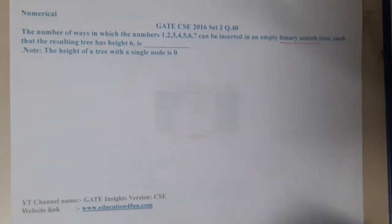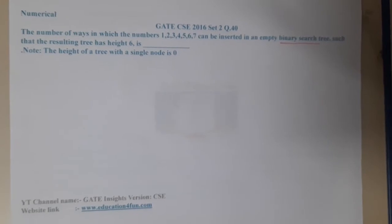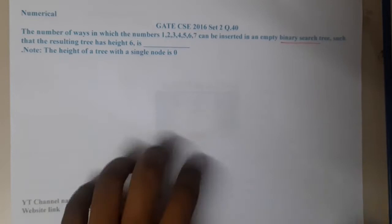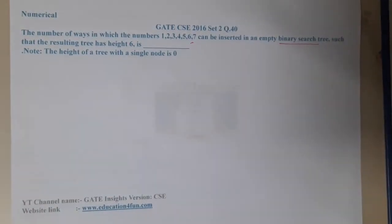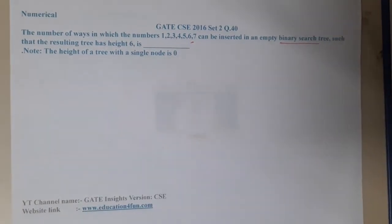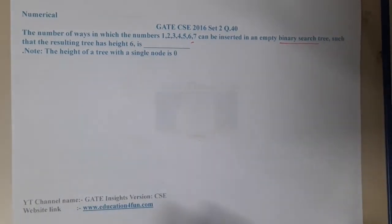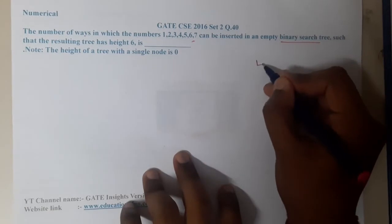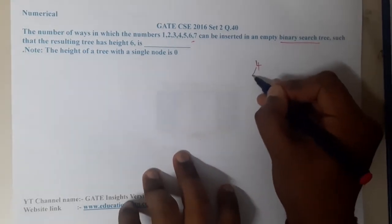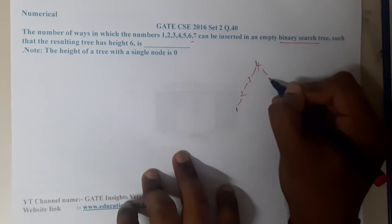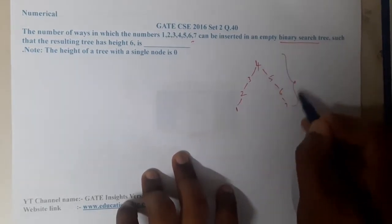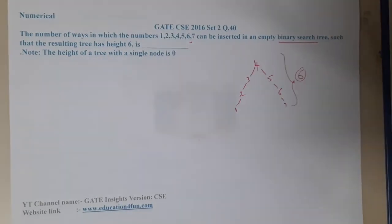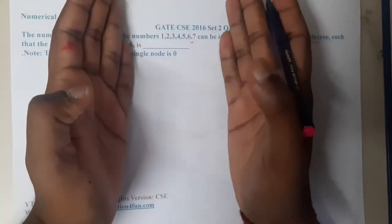Note: the height at the root node is 0. I think this question type we have discussed previously. Here our goal is to have height 6. So if you take any random number, can the height be 6? Just think. Assume that I took 4 as the root. So 3 will come this side, 2 will come this side, 1 will come this side, 5 will come here, 6 will come here, 7 will come here. So any order you take, the height will never go to 6, right?